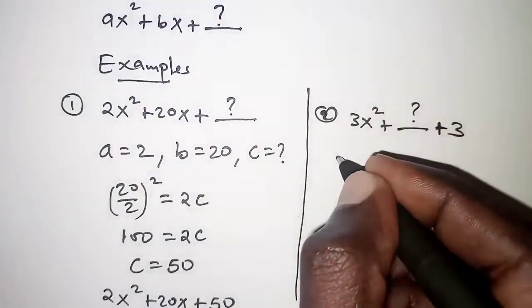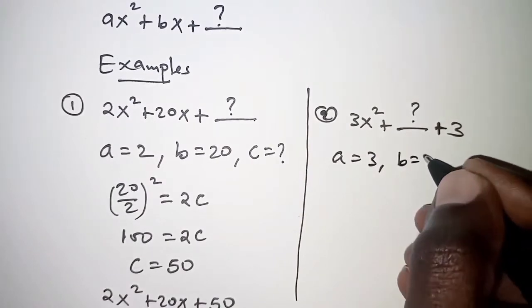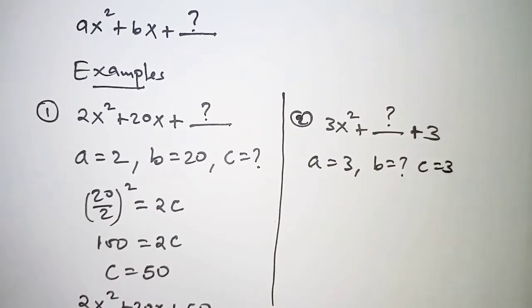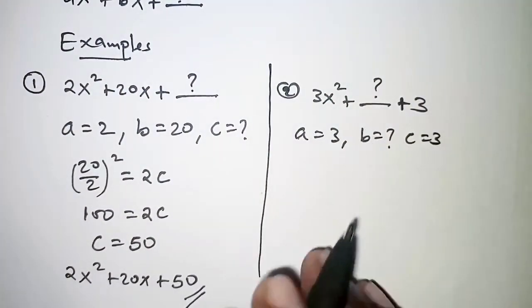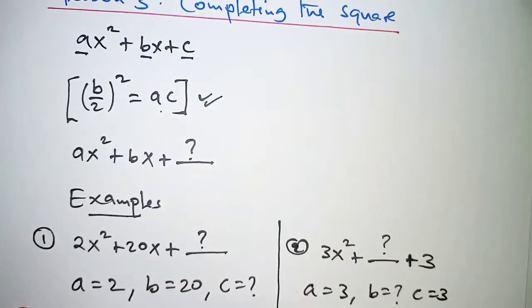So once again we have a as 3, b is missing, and c is 3. We'll have to substitute this in the formula here.